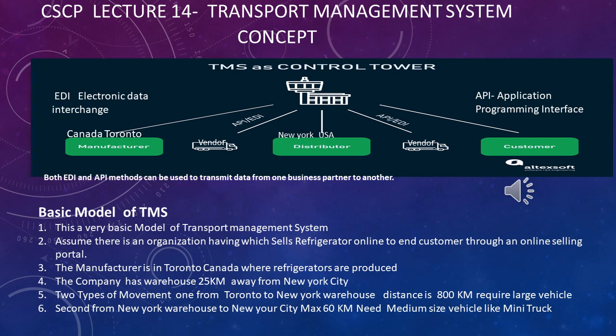Now let's go through the basic concept of TMS. Looking at the picture, there is a TMS control tower. We have a distribution warehouse 25 kilometers away from New York City and a manufacturer 800 kilometers from the warehouse. The concept is that we ship stock from Toronto — 800 kilometers — to the warehouse near New York City, and then ship it to the customer in New York City, for example refrigerators.